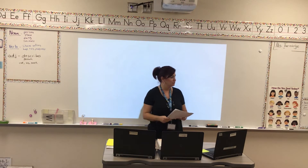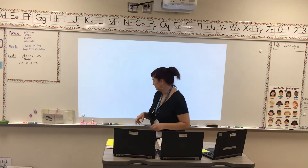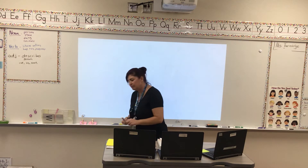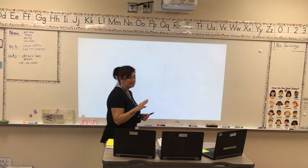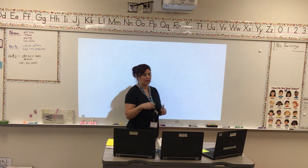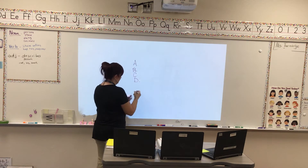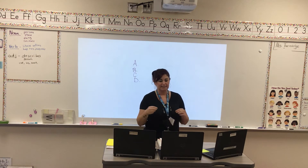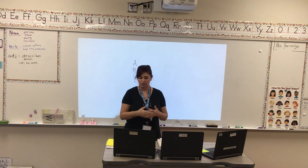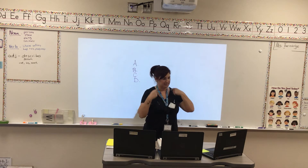We're going to do a test review for our story Spoon today, and we're going to do it just a little bit different. Since you already have your dry erase boards, I'm going to say the question and give you four options: A, B, C, or D. What I want you to do is write the correct letter for the answer to the question. We'll try it together and see if you can get it.